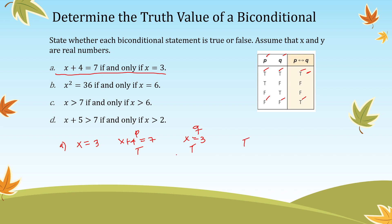Now when x = -3: negative 3 plus 4 does not equal 7, so P is false. And x = -3 means x = 3 is also false. Both statements are false, so the truth value of the biconditional statement is still true.